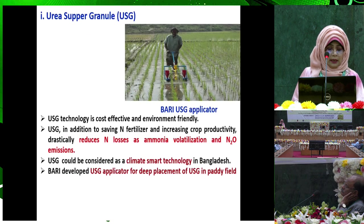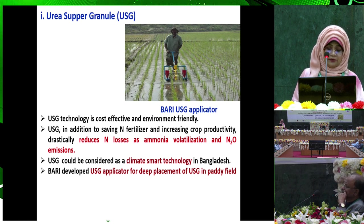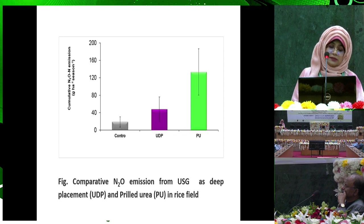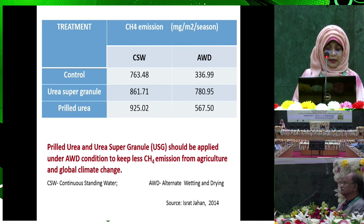Urea supergranule technology is cost-effective and environment-friendly. It reduces nitrogen losses as ammonia volatilization and nitrous oxide emission. USG can be considered a climate-smart technology in Bangladesh. BARI developed a USG applicator for deep placement of USG in paddy fields. The nitrous oxide emission is higher when prilled urea is used compared to USG. Prilled urea and urea supergranule should be applied under AWD conditions to keep methane emission lower from agriculture.